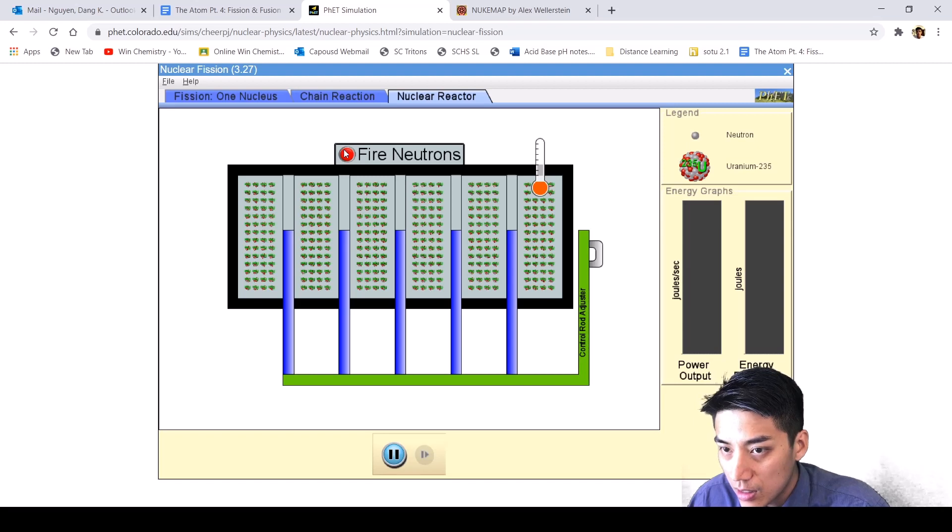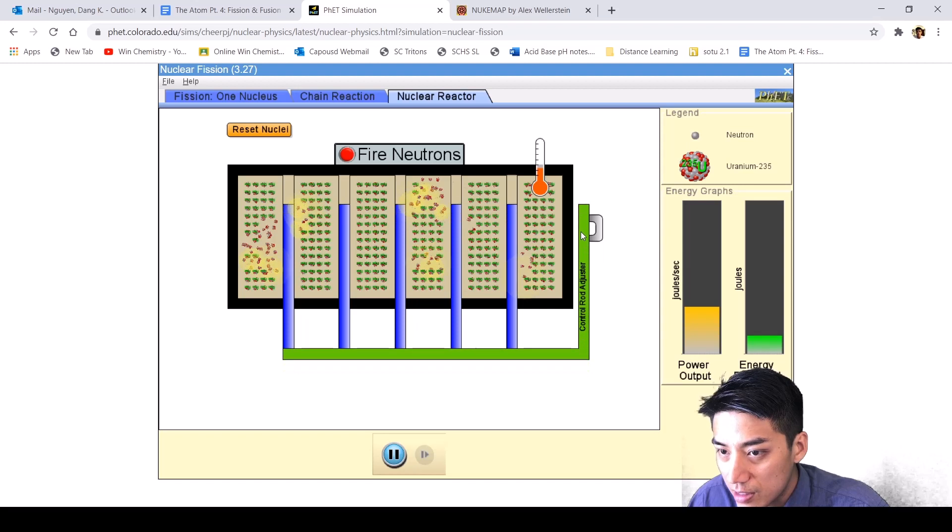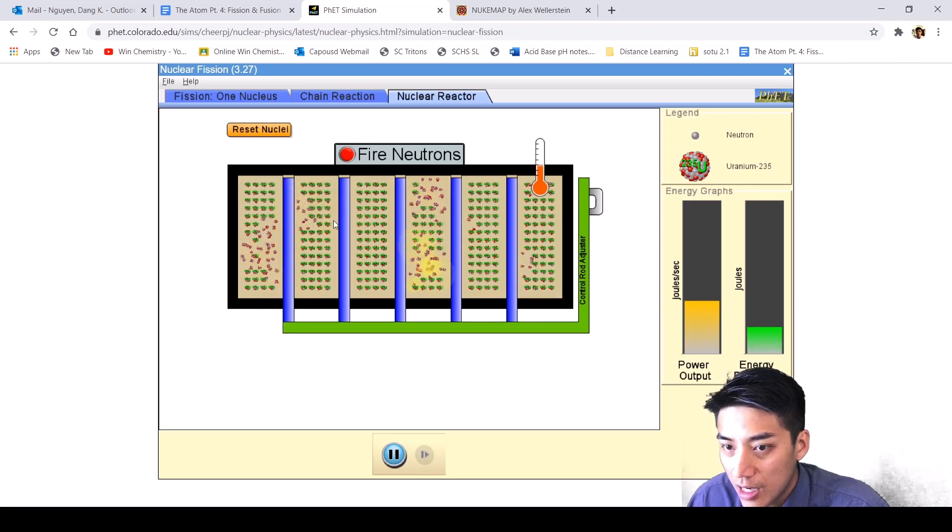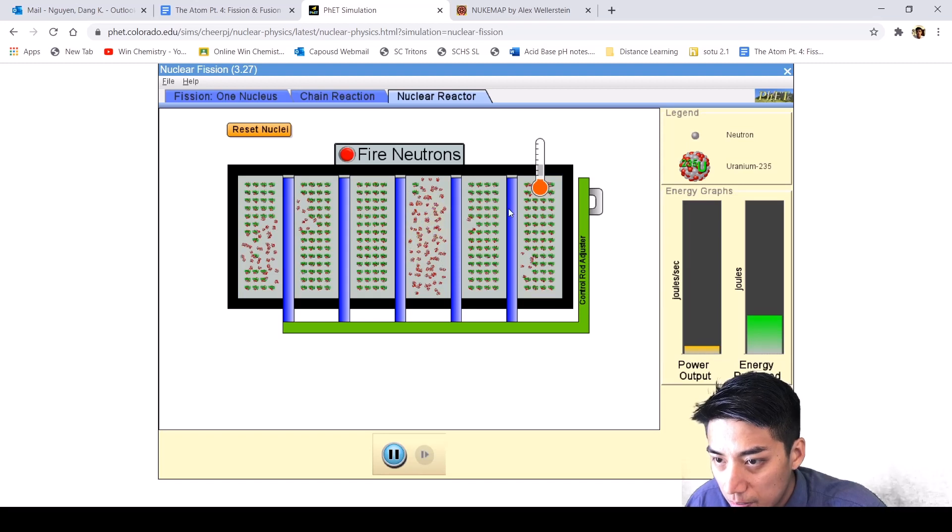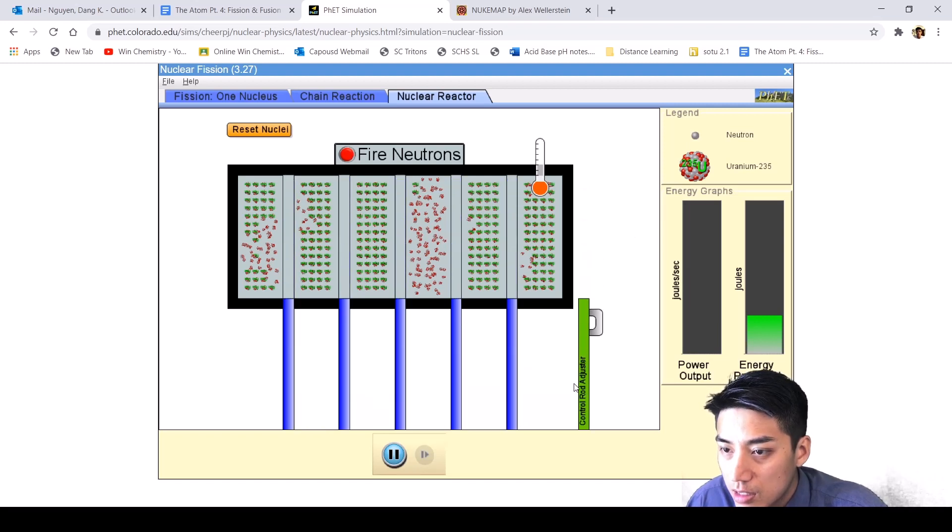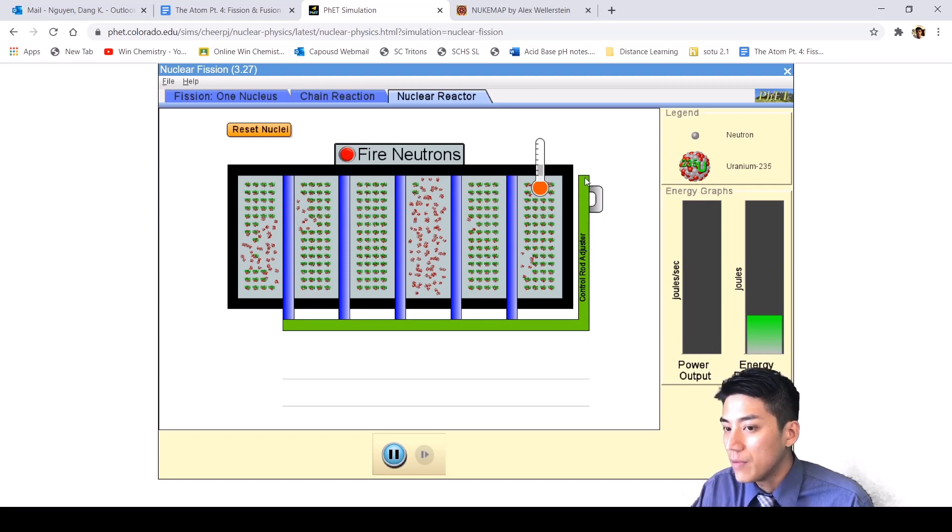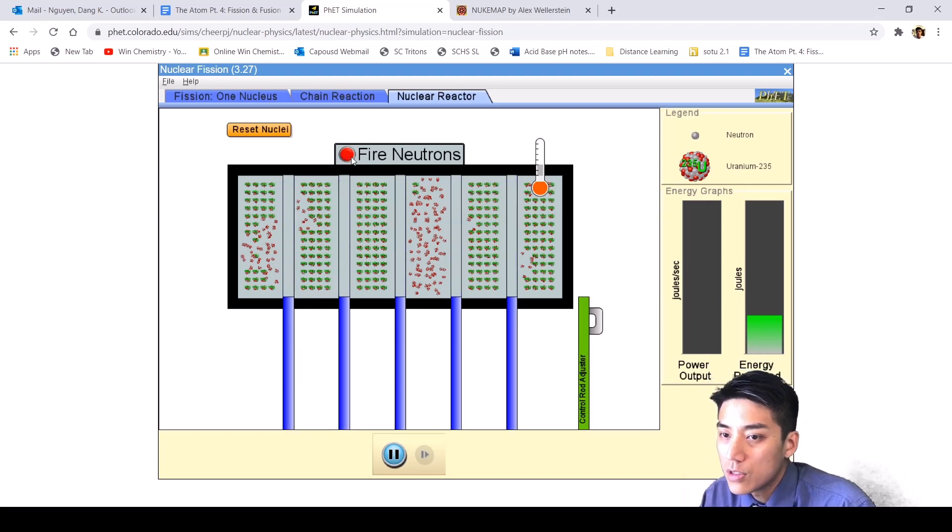Now the control rods can actually help mitigate this problem. So it's a balancing act where I want to create energy, right? And if I stick these control rods in, it actually prevents the neutrons from reacting with these other nuclei that are over here. And so that's what the control rods do. They prevent the reaction from running away. You don't want a runaway chain reaction. Otherwise, you have a nuclear meltdown.